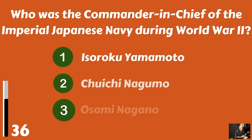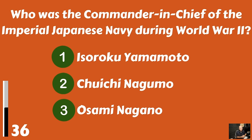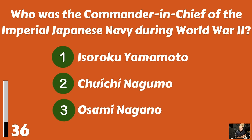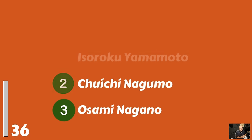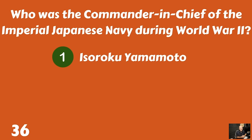Who was the commander in chief of the Imperial Japanese Navy during World War II? Isoroku Yamamoto? Chuichi Nagumo? Or Osami Nagano? It was Isoroku Yamamoto.